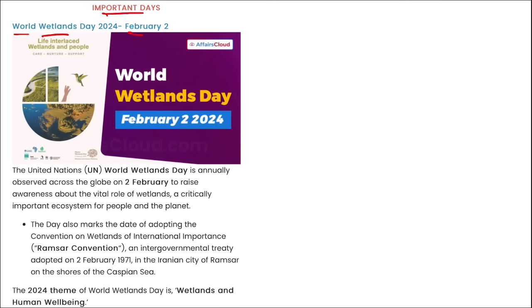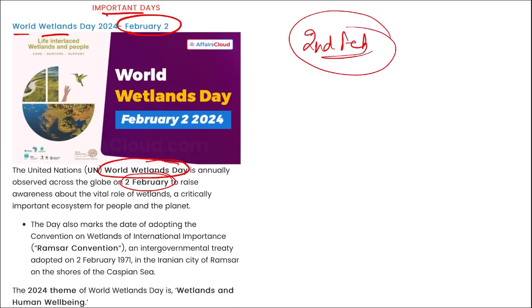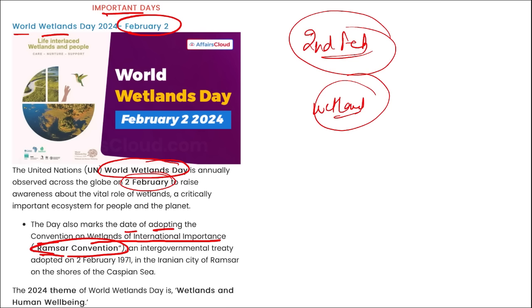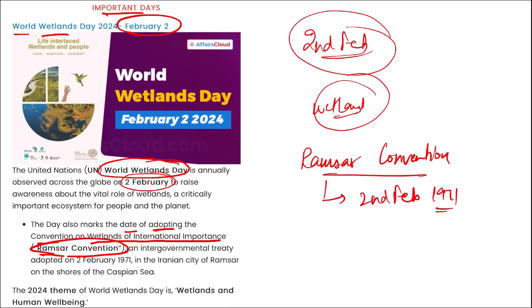World Wetlands Day is annually observed on 2nd February to raise awareness about the important roles of wetlands in our ecosystem. The day marks the adoption of the Convention on Wetlands of International Importance — the Ramsar Convention — on 2nd February 1971 in the Iranian city of Ramsar on the shores of the Caspian Sea. The 2024 theme for World Wetlands Day is 'Wetlands and Human Wellbeing.'